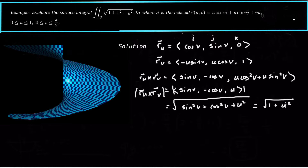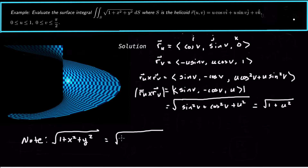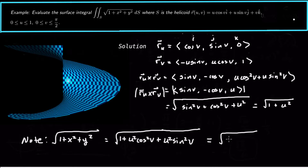This is the Jacobian we multiply into our surface integral. Note that the integrand √(1 + x² + y²) can be rewritten by substituting x = u·cos v and y = u·sin v, giving √(1 + u²·cos²v + u²·sin²v). Factoring out u², and using sin²v + cos²v = 1, this simplifies to √(1 + u²). So the integrand is √(1 + u²), and we multiply it again by the Jacobian √(1 + u²).